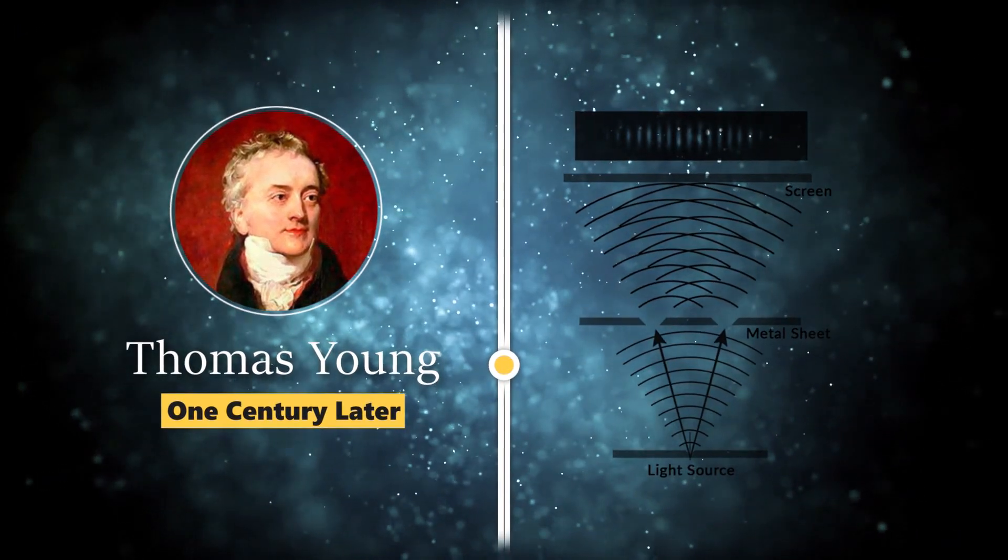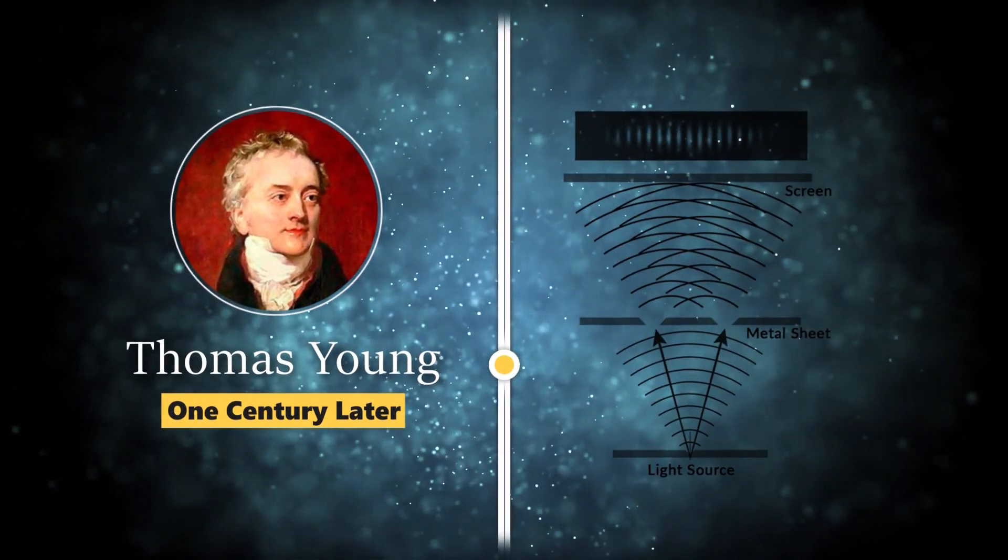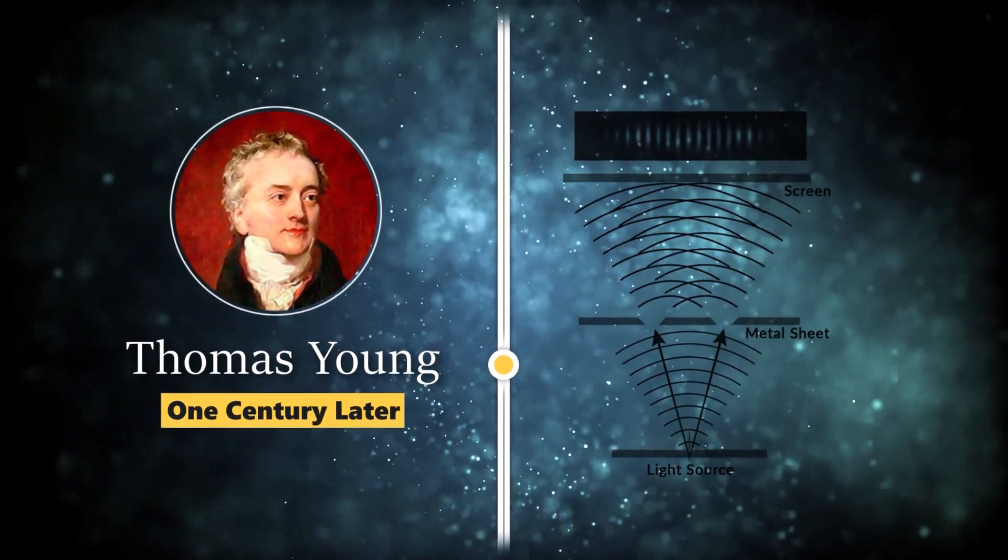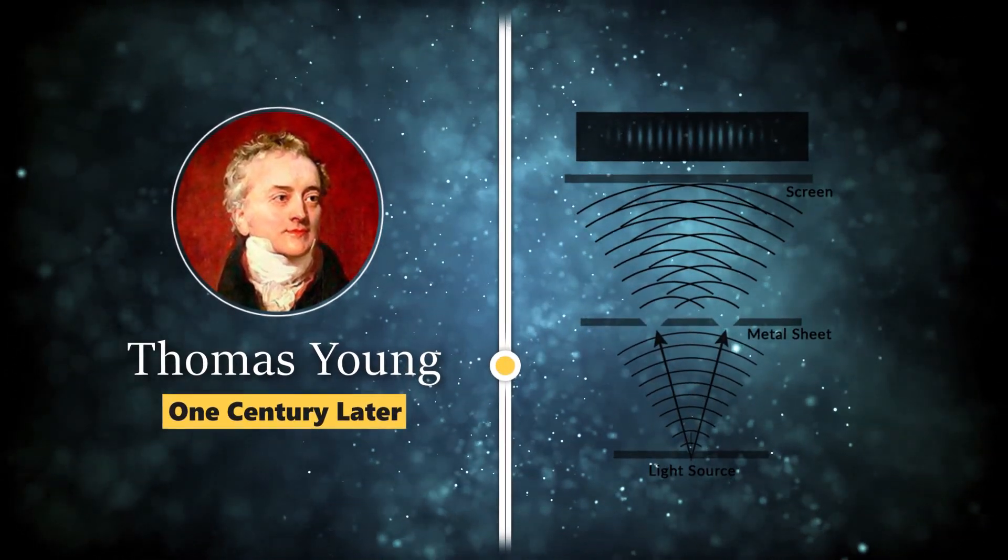After about one century, the double-slit experiment of Thomas Young derived evidence that could be explained only if we know the light as a wave.